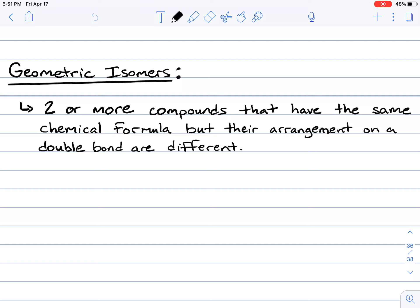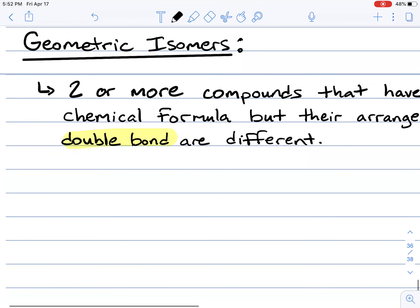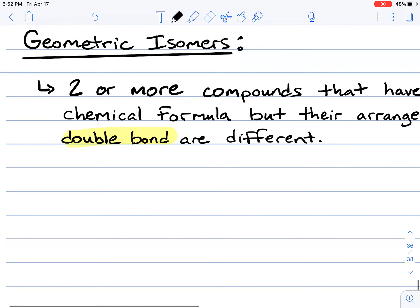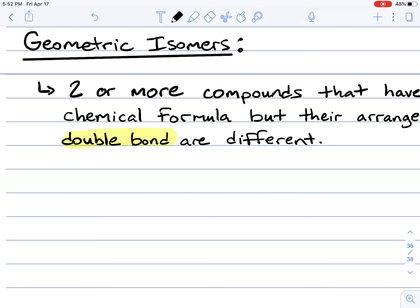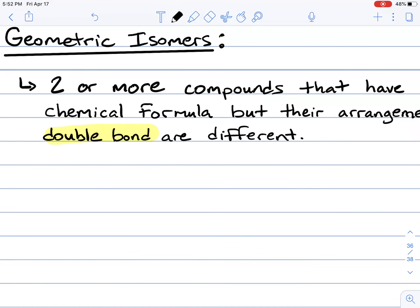The double bond is going to be our point of focus for geometric isomers. To understand why double bonds get special treatment, we have to think about how atoms that are covalently bonded twice — in other words, if two consecutive carbon atoms have a double bond — we need to understand how they can rotate with respect to each other.